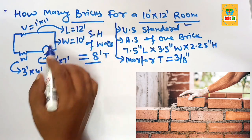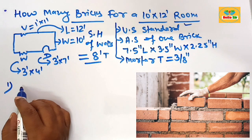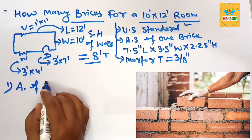To figure out the number of bricks, first find the area of the 4 walls.